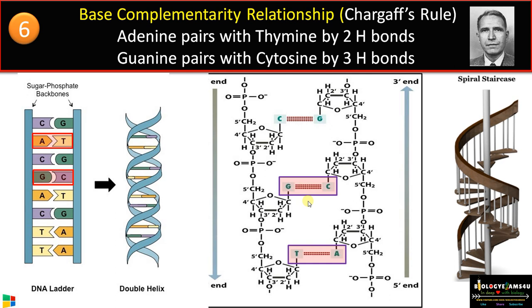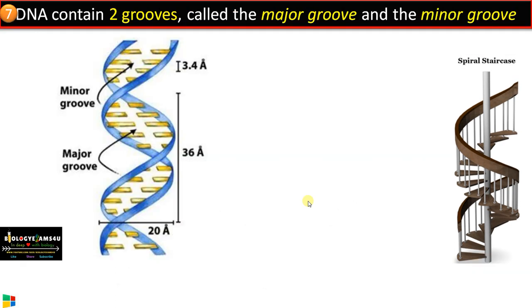A detailed video on Chargaff's rule and how to calculate base composition is available for further reference. Point number eight: DNA contains two types of grooves called the major groove and the minor groove.